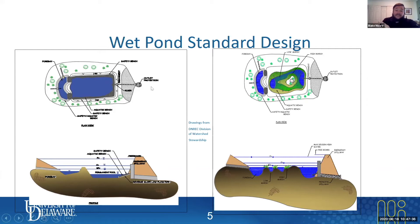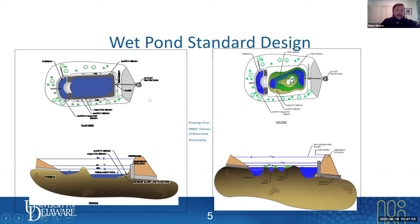Where your pond empties into is going to come through a pipe and usually outlet into either a ditch, a branch, or another conveyance system to move the water along. These ponds are normally designed to not outlet water in a greater amount than before construction was there, so it shouldn't stress the downstream system too much. You'll have outlet protection — usually riprap — so just check on that, make sure there's no vegetation in it and the water is getting out as it should.